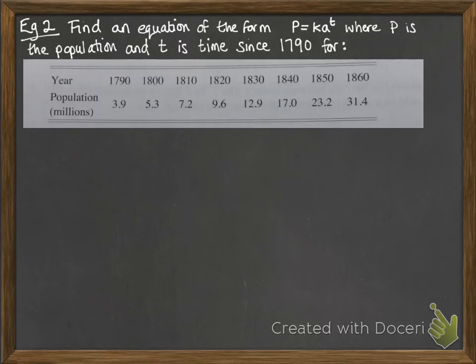We'll have a look at an example of the other type. This time we're told we need an equation of the form P equals ka to the t, so this time our variable is in the power instead of being the thing that's getting raised to a power. We're doing it for this table of data here which is population in America. First of all, we need to work out the values of t because we want time since 1790 in years, and we need to work out log P.